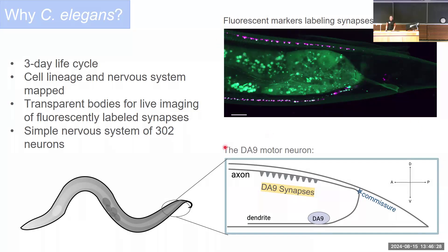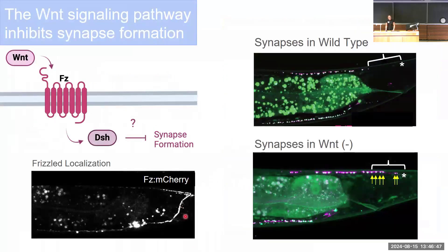Out of these 302 neurons, I focus on just one named DA9. DA9 forms 20 synapses along its axon, and we found that the placement of these synapses is regulated by both Wnt signaling and Zonula Occludens. The Wnt signaling pathway involves the ligand Wnt binding to the receptor Frizzled, which activates Disheveled and inhibits synapse formation. When tagged with fluorescent markers, Frizzled localization is enriched in the proximal axon of DA9, and in loss of function mutants of both Wnt and Frizzled, we see excessive synapse formation in that same area.